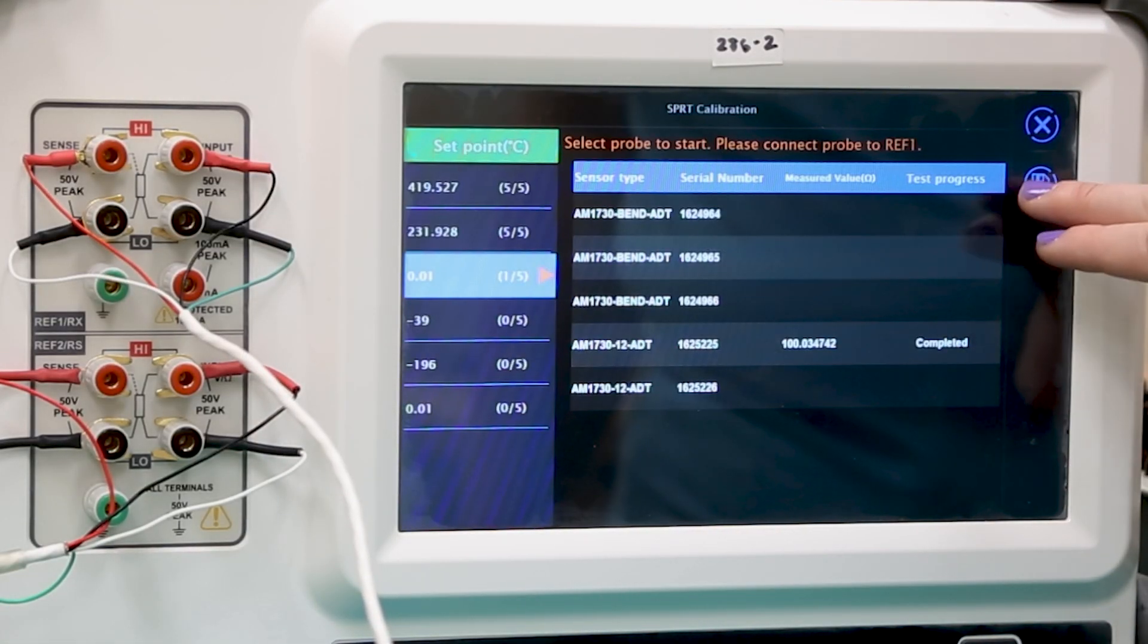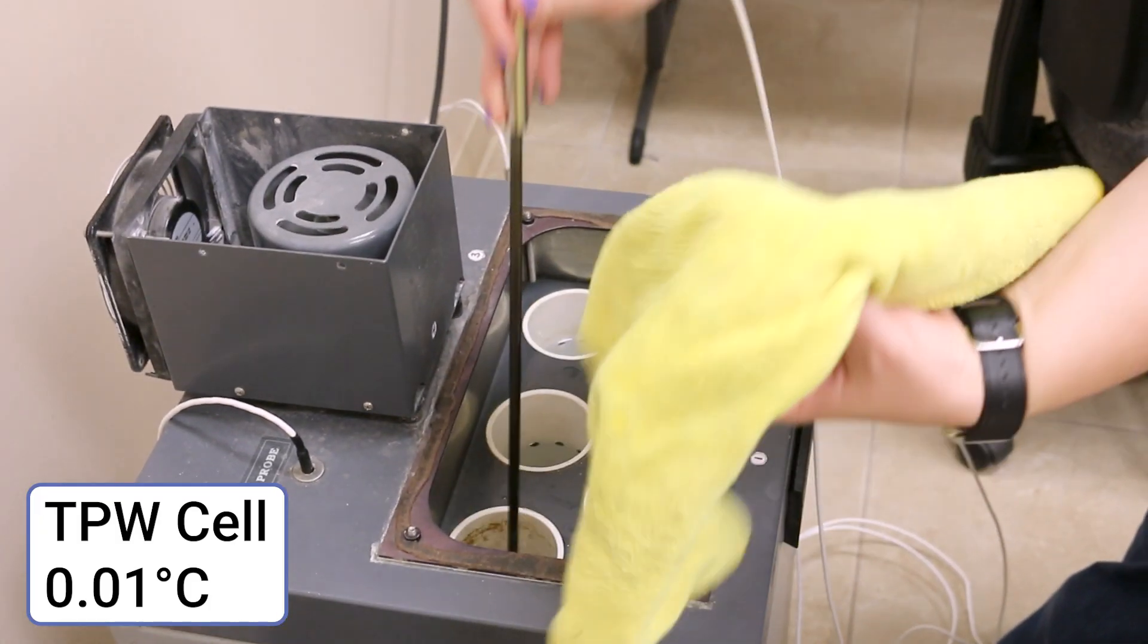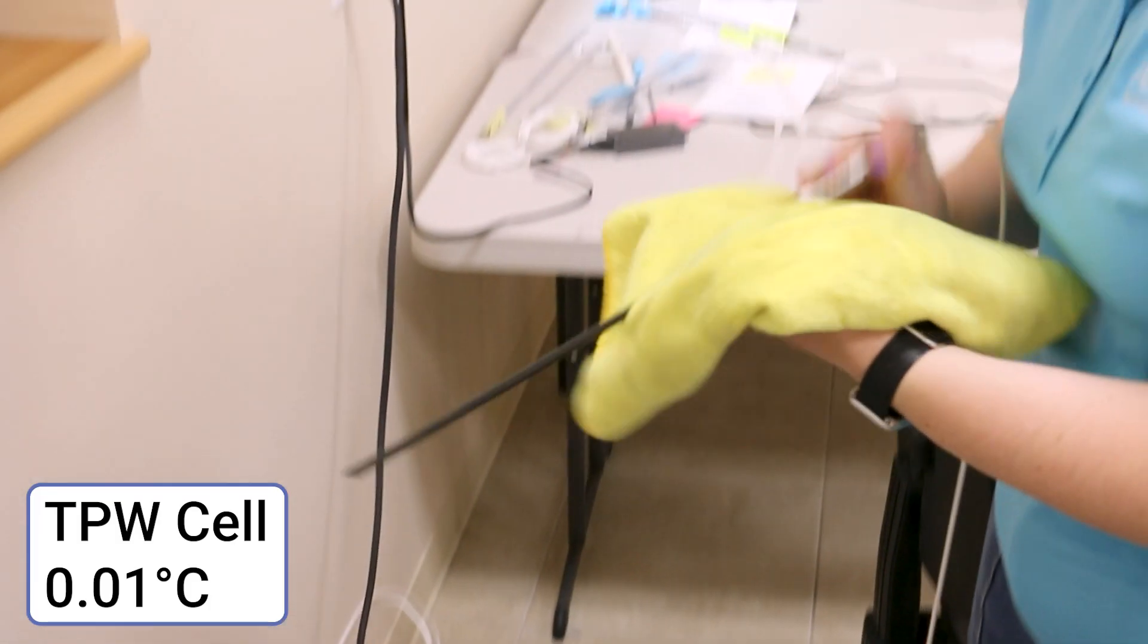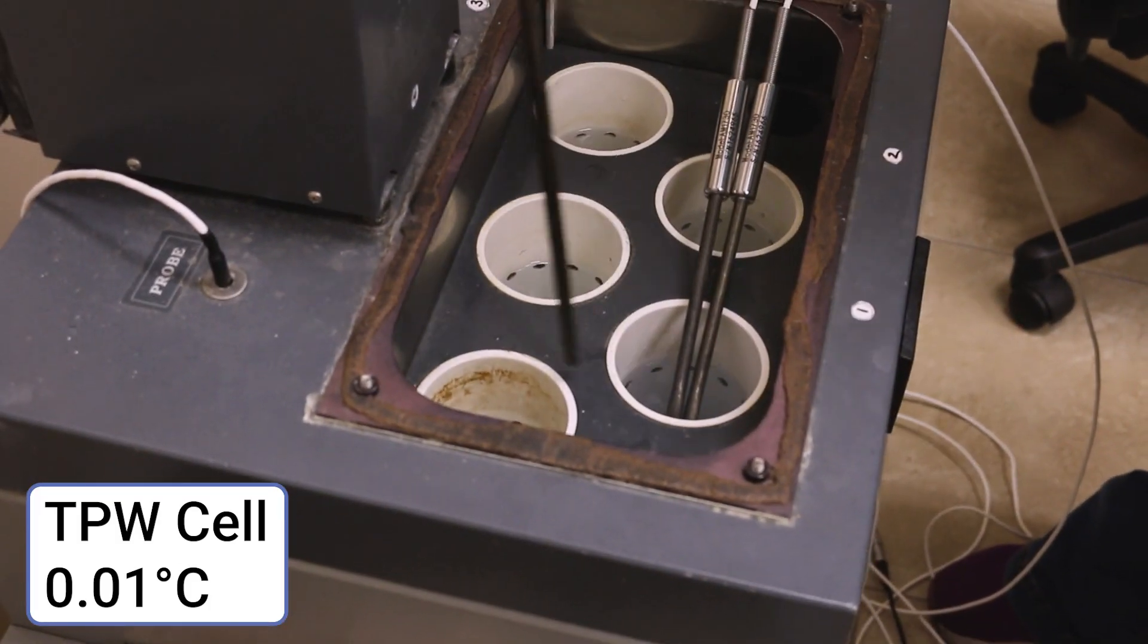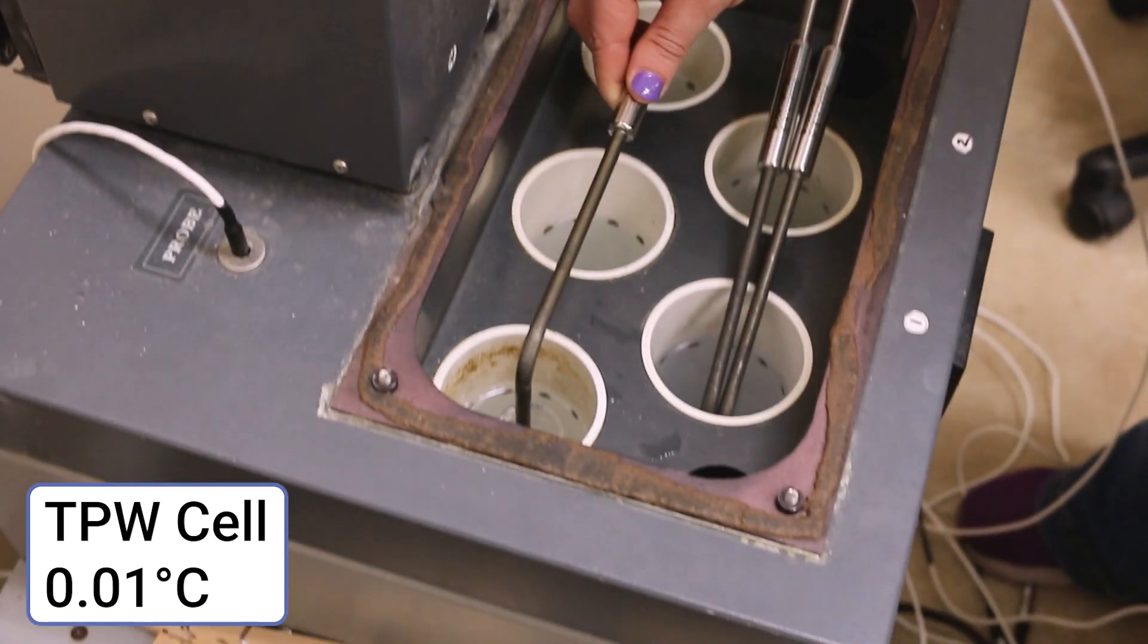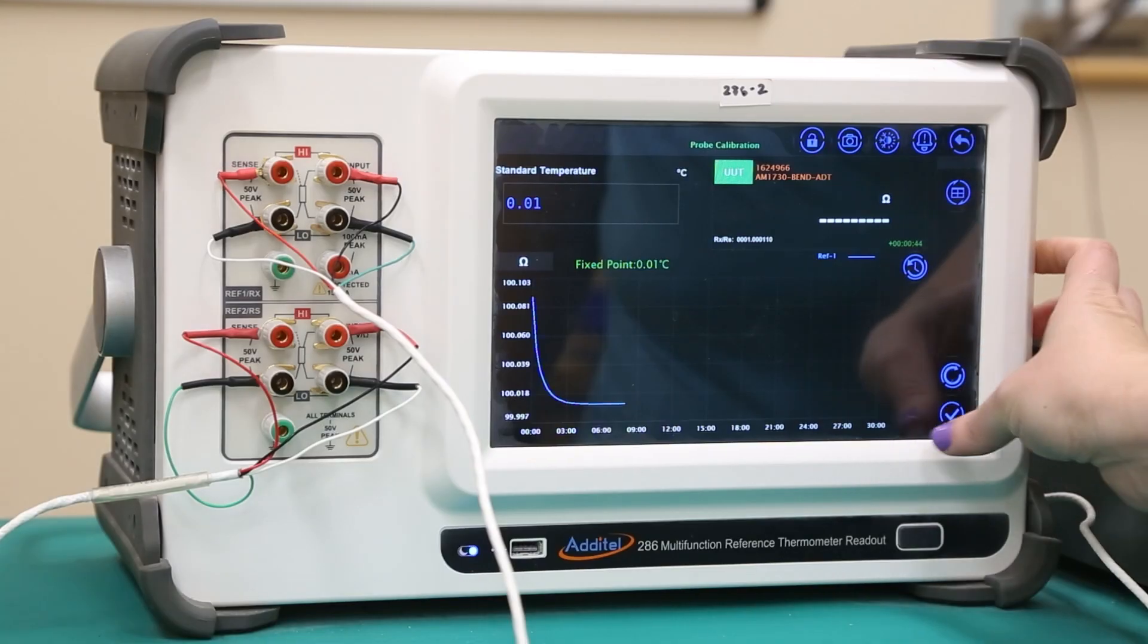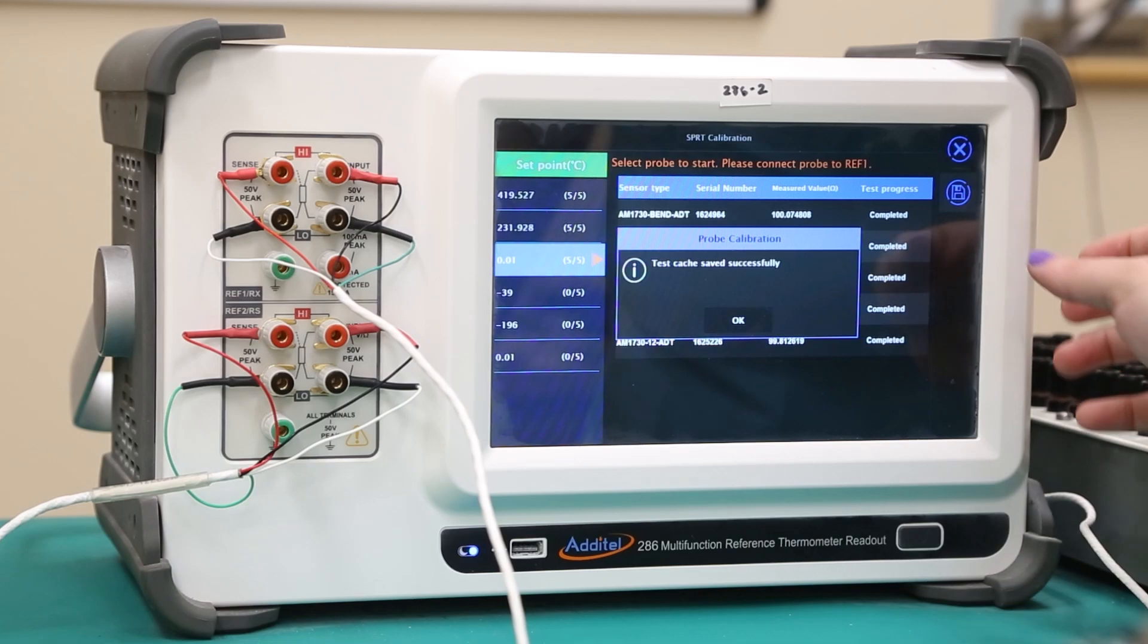After the probe has been measured, save the test cache, remove the probe from the cell, and dry it off. Swap the connection to the next probe to be measured, add it to the triple point cell, and repeat the process to complete the measurement. After all probes have been measured at the triple point of water, we will move to the triple point of mercury.